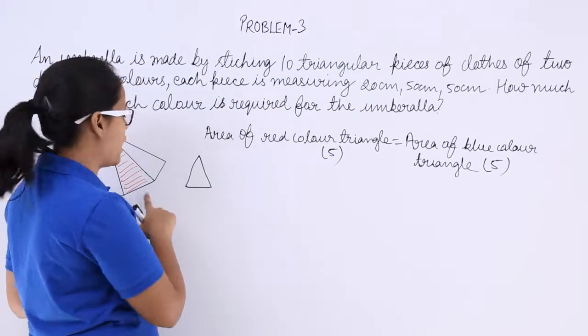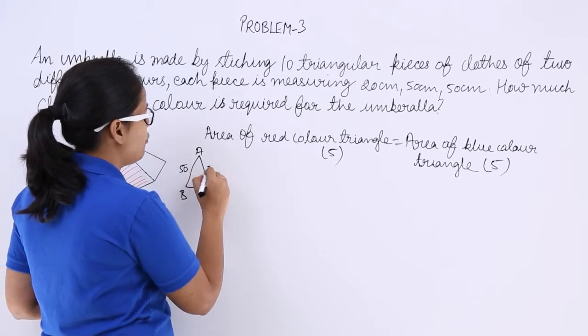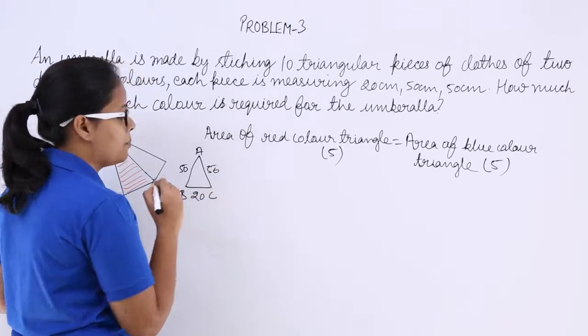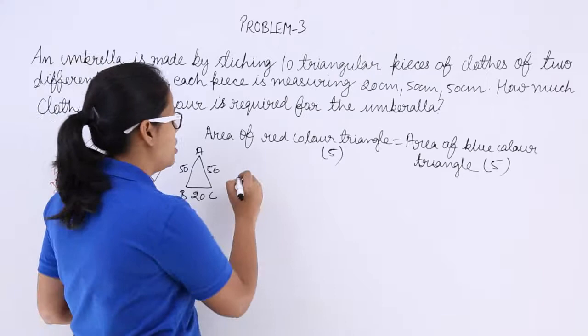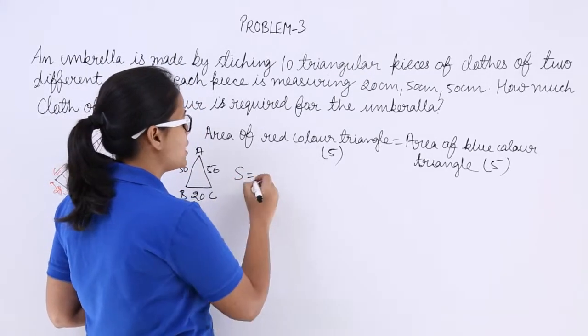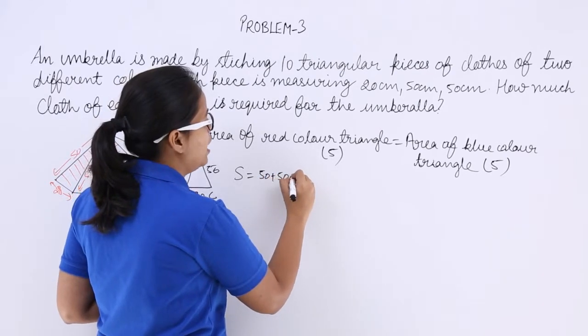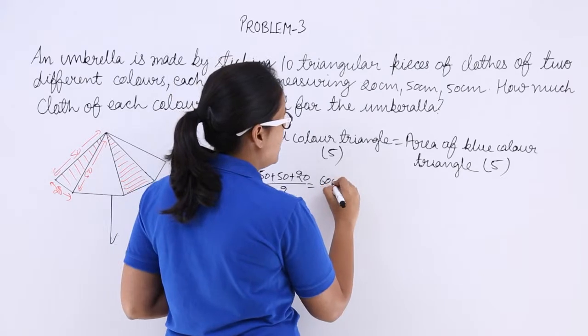One piece of triangle in this umbrella, let's suppose this is ABC. Sides are 50, 50, and 20. So let's first calculate semi-perimeter of this. Semi-perimeter is S equals sum of all the sides: 50 plus 50 plus 20 divided by 2. So you will get 60 centimeter.